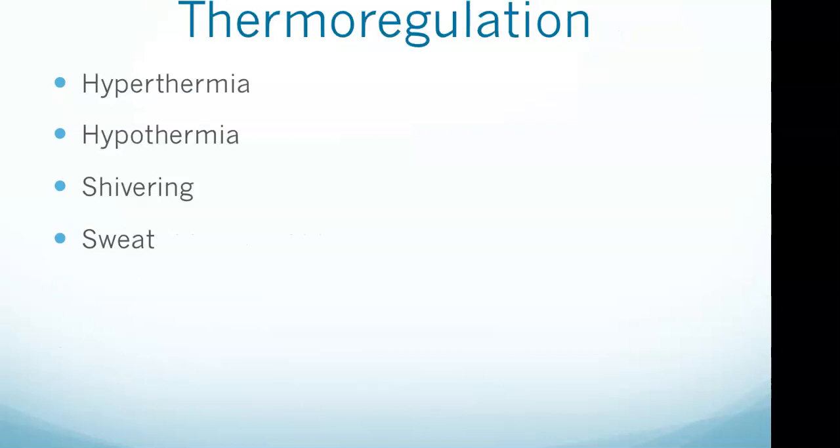Let's jump into thermoregulation, especially with hyperthermia and hypothermia. Hyperthermia means body temperature is too high. In response, the body dilates blood vessels in the dermis to increase heat loss at the skin. The big point for hyperthermia: it dilates blood vessels in the dermis to increase heat loss at the skin.